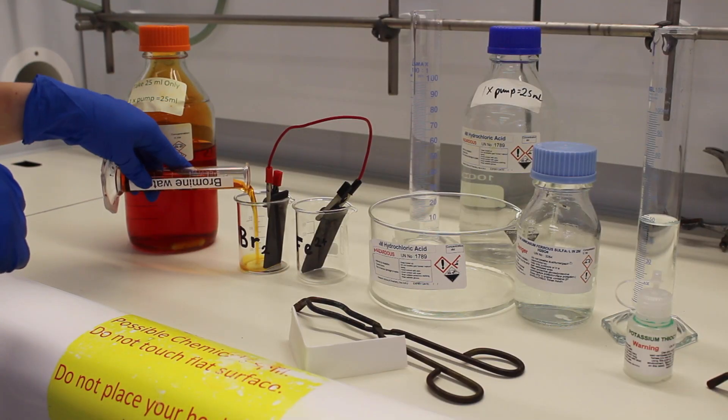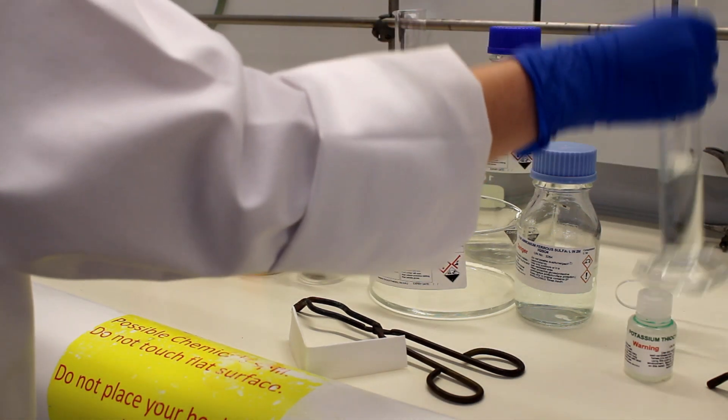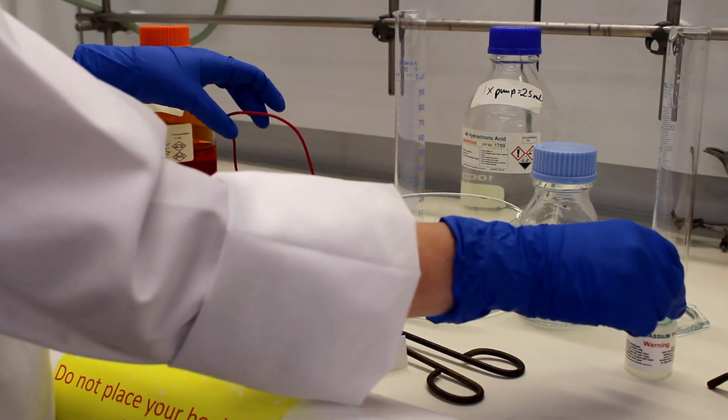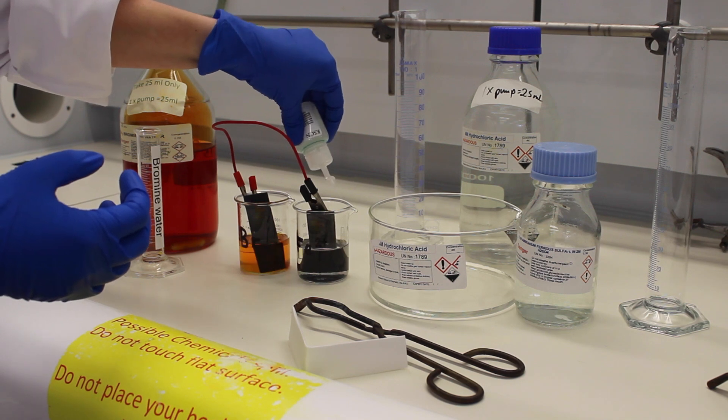Fill one of your beakers with 25 ml of bromine water and 25 ml of hydrochloric acid. To your other beaker, add 50 ml of iron 2+ solution and a few drops of potassium thiocyanate as an indicator. Have one rod in each beaker connected by the wire.